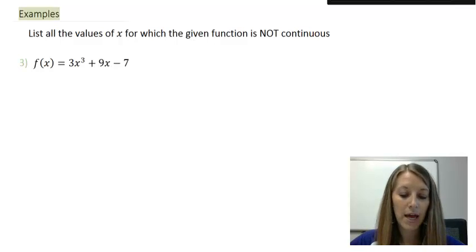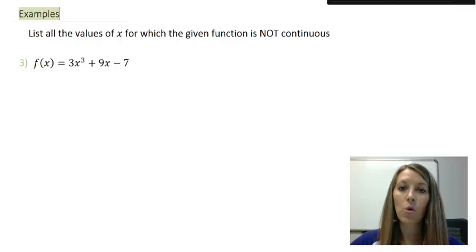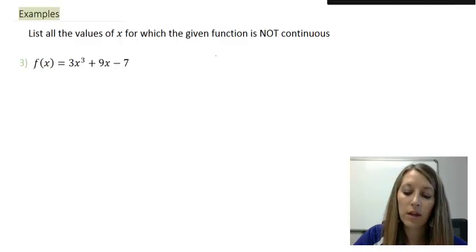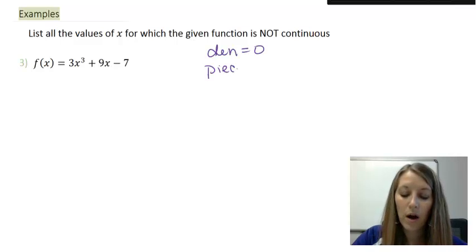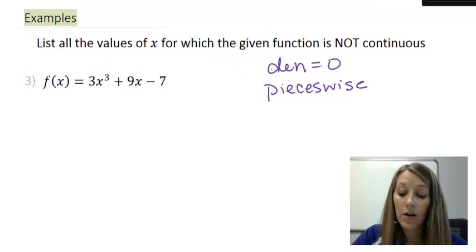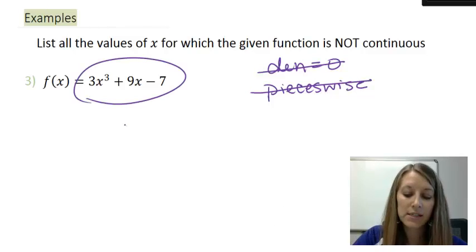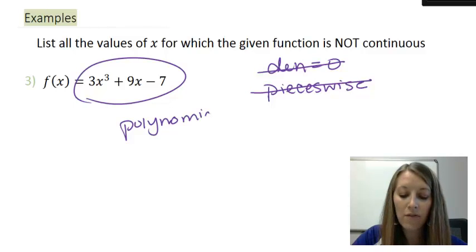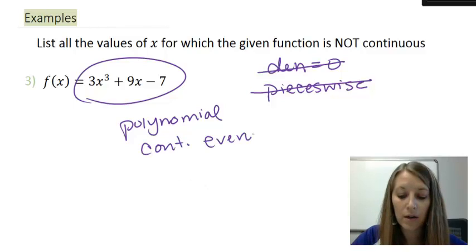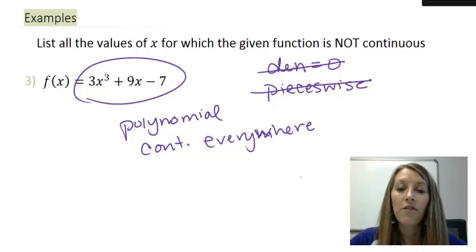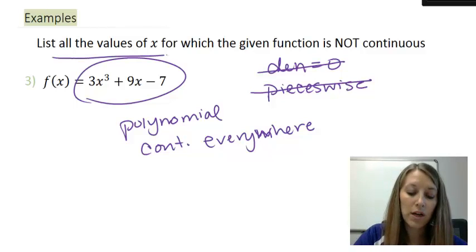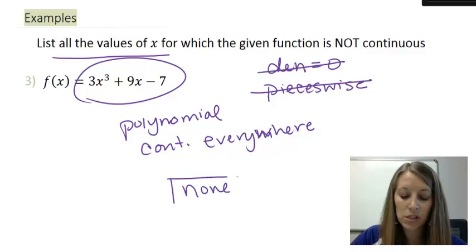Example 3: f of x equals 3x cubed plus 9x minus 7. We want to look at where our denominator is equal to zero or where pieces don't match in a piecewise function. There are no denominators here and no piecewise functions — this is a polynomial function. Polynomials don't ever have anything tricky going on, so polynomials are always continuous everywhere. We don't ever have to do any work for this type of problem. Again, listing all x values where the function is discontinuous: there are none.